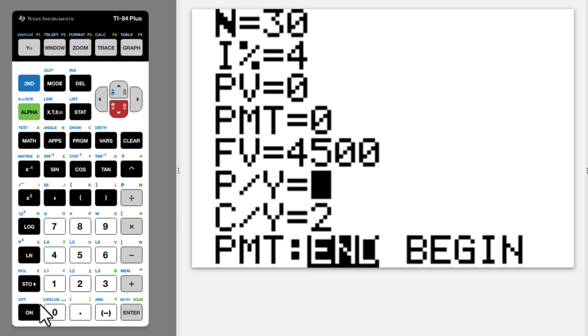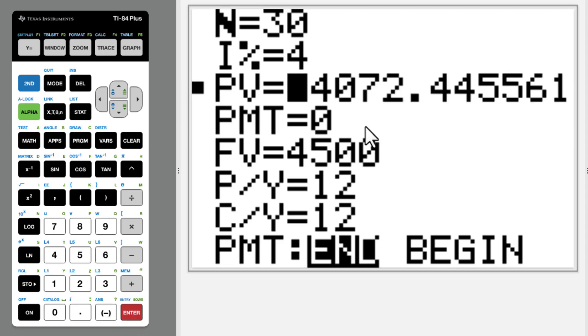Payment per year, let's put 12. Compound period per year, 12. Then go back to PV. Alpha, Enter. Answer is negative $4072.45.